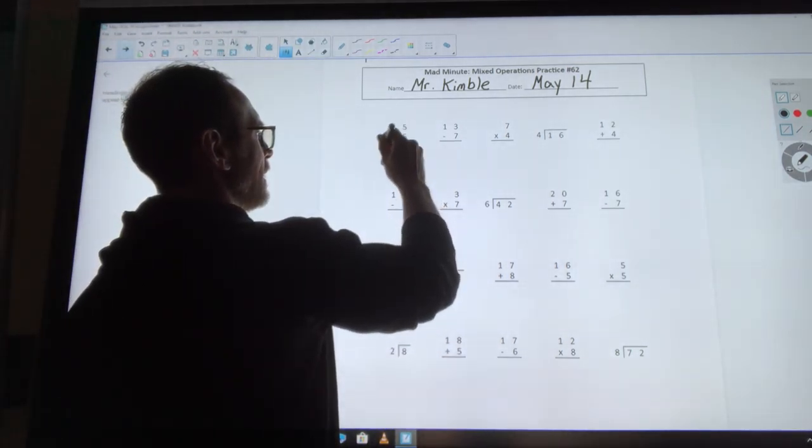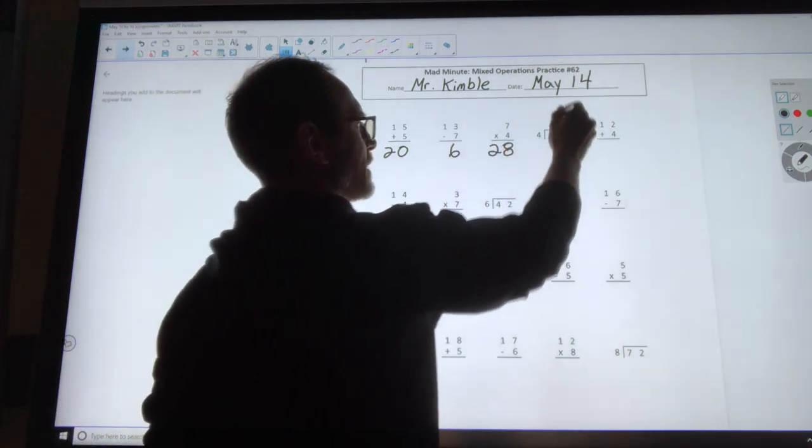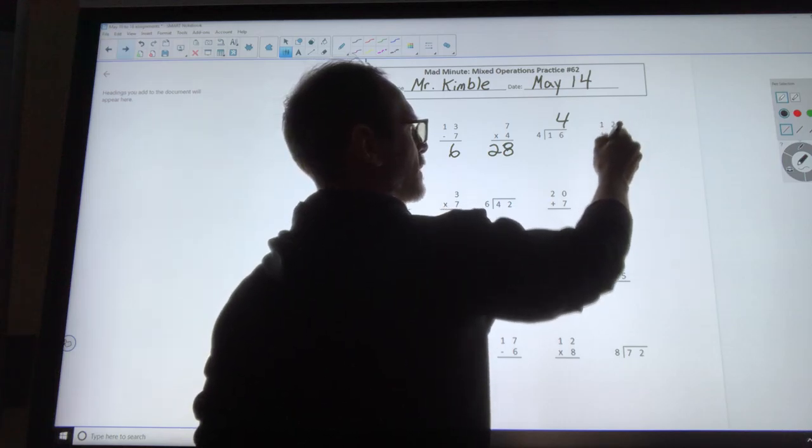15 plus 5 is 20. 13 minus 7 is 6. 7 times 4 is 28. 16 divided by 4 is 4.